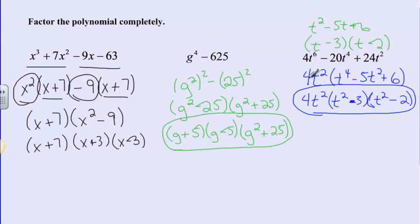Essentially, when a polynomial goes to the fourth, then the second, then a constant term, it's very similar to a standard quadratic setup. If we can factor the quadratic pattern, we can factor the quartic. I hope you learned a little something about factoring polynomials — good luck!